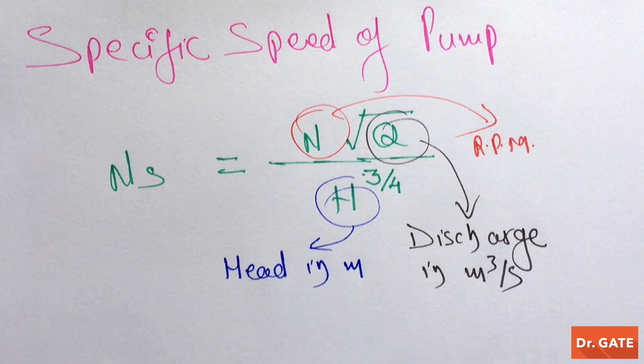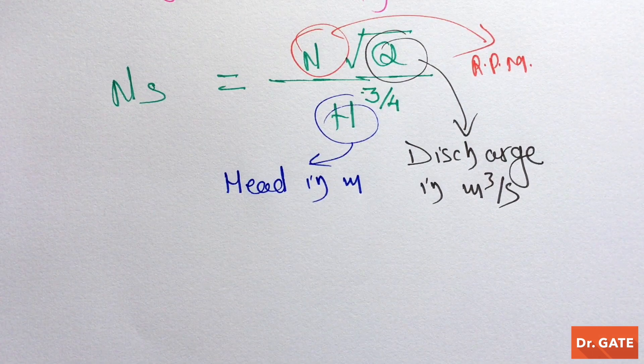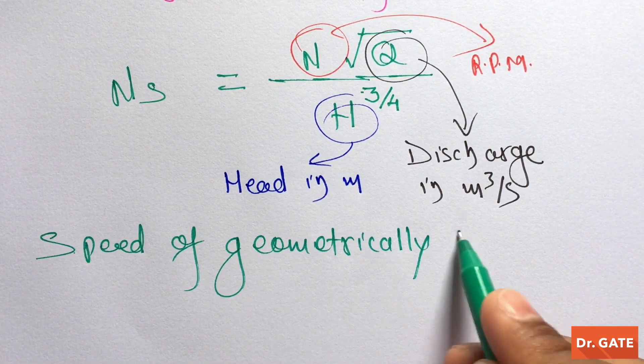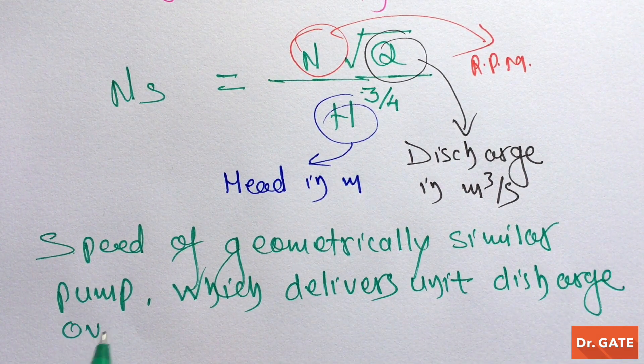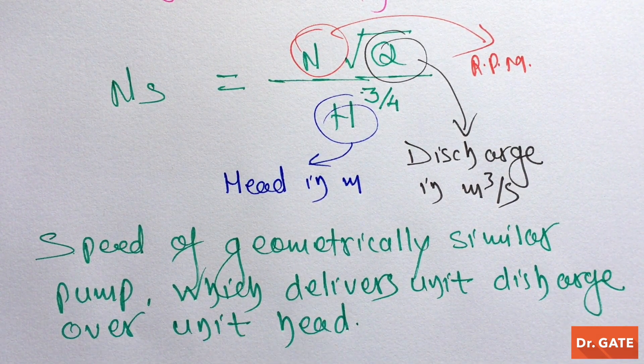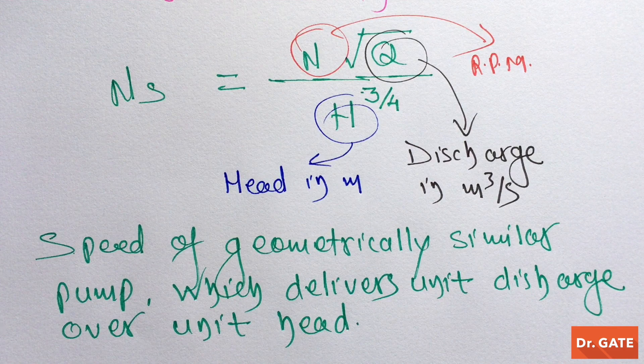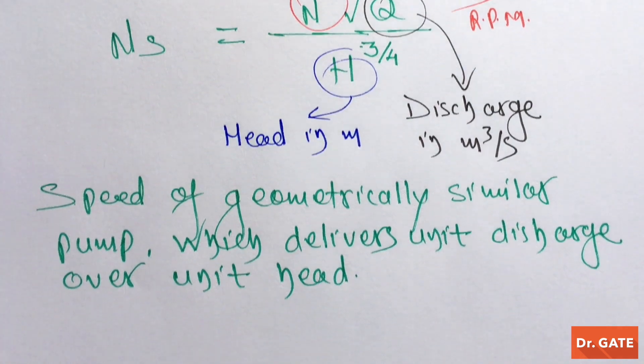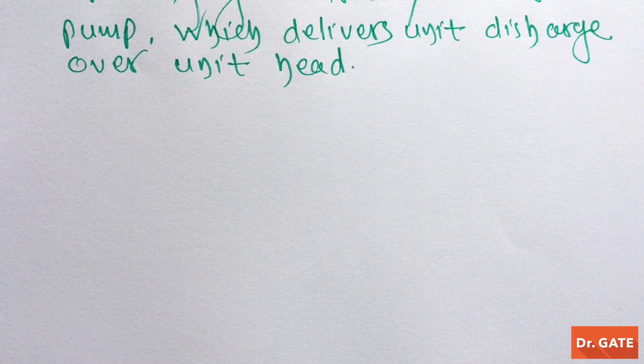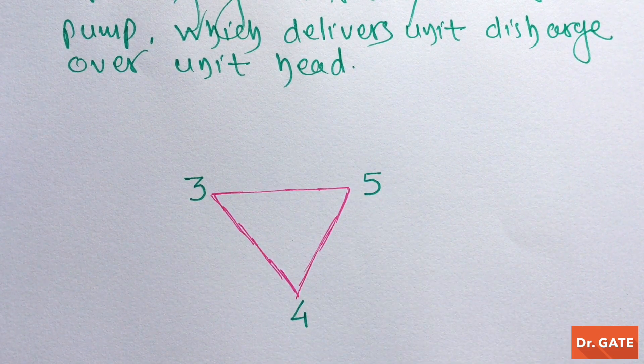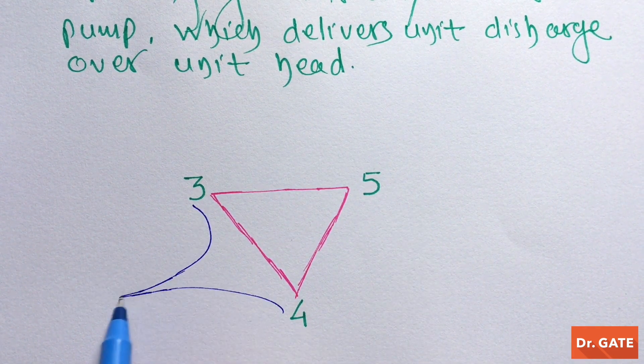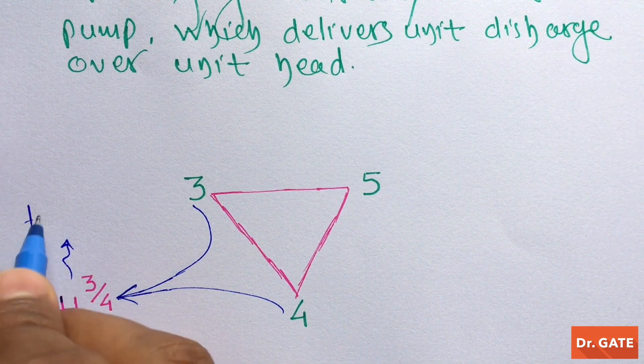We can define specific speed of a pump as the speed of geometrically similar pump which delivers unit discharge over unit head. And in case if you are getting confused about the power of H for pump and turbine, then I have a trick for this. Just draw a triangle and write 3, 4, 5 in this way. Then from here you get H to the power 5/4 for turbine and H to the power 3/4 for pump.